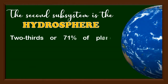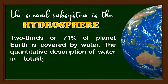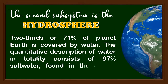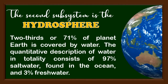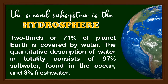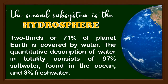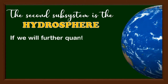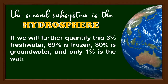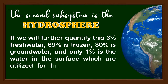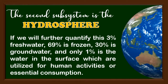Two-thirds, or 71%, of planet Earth is covered by water. The quantitative description of water in totality consists of 97% salt water found in the ocean, and 3% freshwater. If we further quantify this 3% freshwater: 69% is frozen, 30% is groundwater, and only 1% is surface water, which is utilized for human activities or essential consumption.